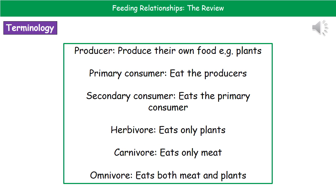There are a few key terms associated with food chains. First is a producer — producers are organisms that produce their own food, and the best example are plants. Your primary consumer is the one that eats the producer. The secondary consumer eats the primary consumer, and so on.